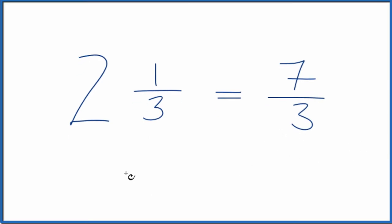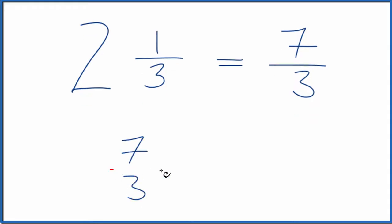We can check our work, too. We could take 7 thirds, that's our improper fraction, and then change it back to a mixed number. So 3 goes into 7 two times. 2 times 3 is 6 with 1 left over, and we just bring the 3, the denominator, across. We get 2 and 1 third.